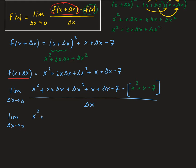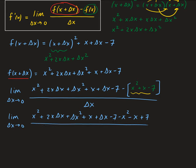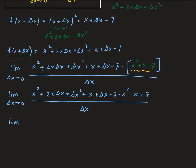So we're going to get x squared plus 2x delta x plus delta x squared plus x plus delta x minus 7, minus x squared minus x plus 7, all divided by delta x. We just take the opposite signs of that expression, giving us minus x squared minus x plus 7. Now things will cancel: this x squared cancels out with this x squared.